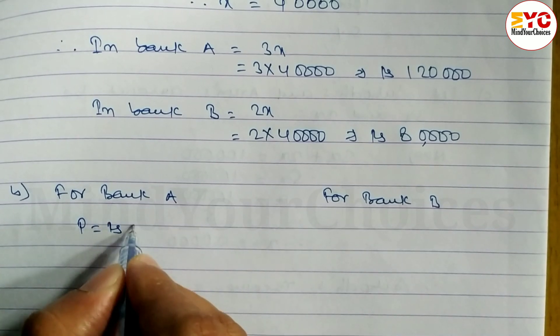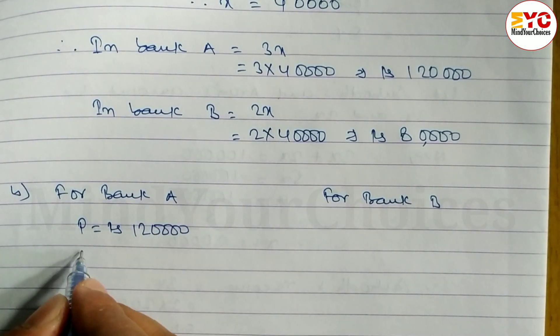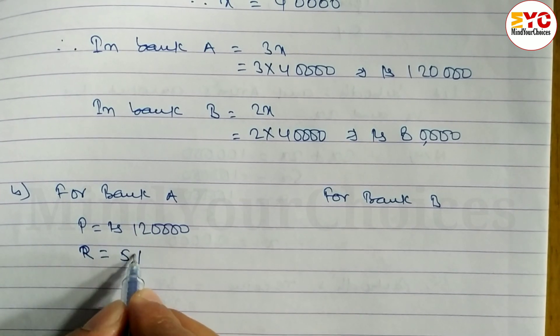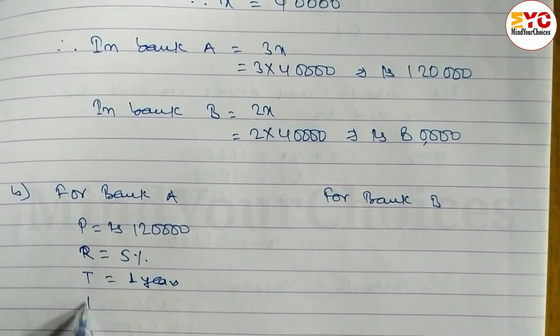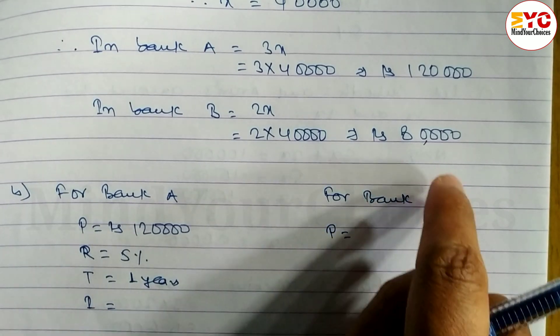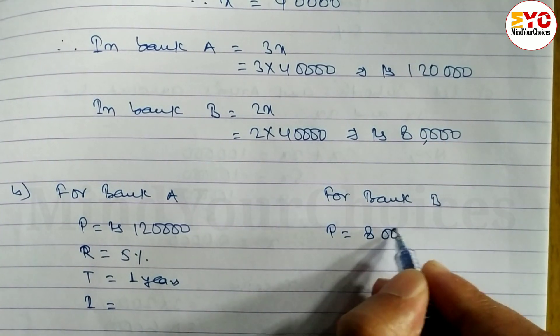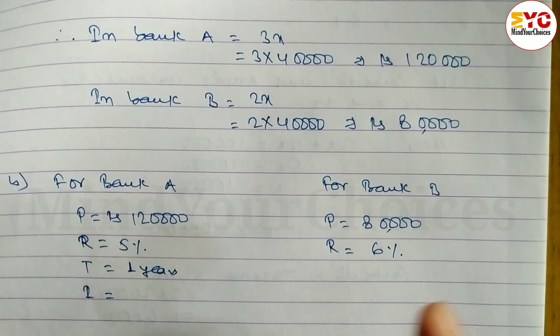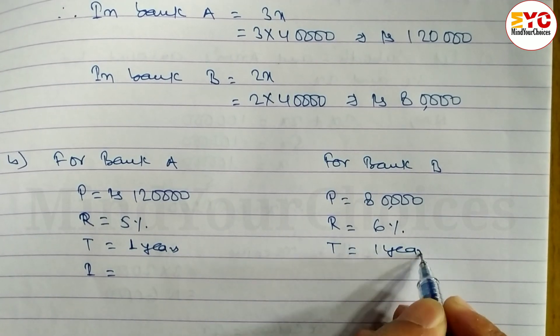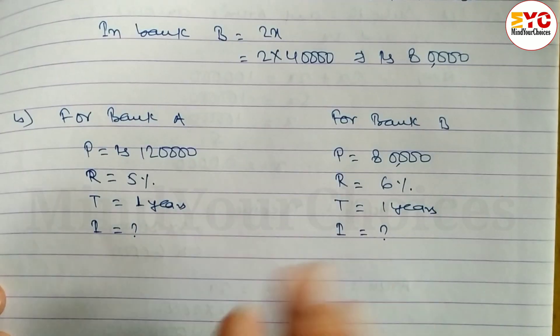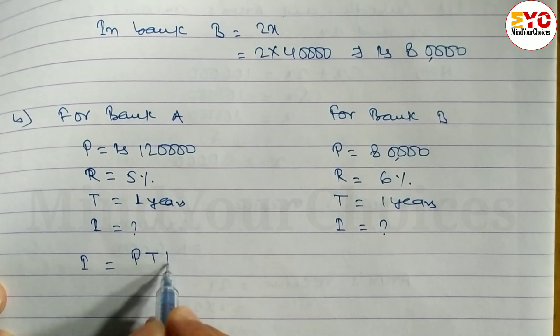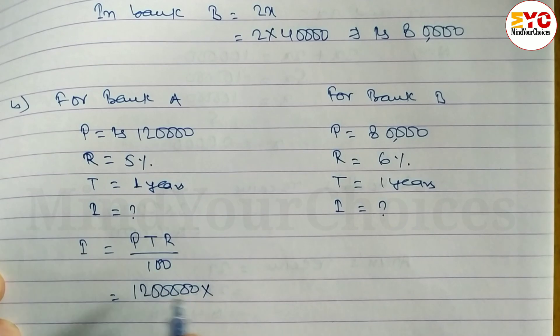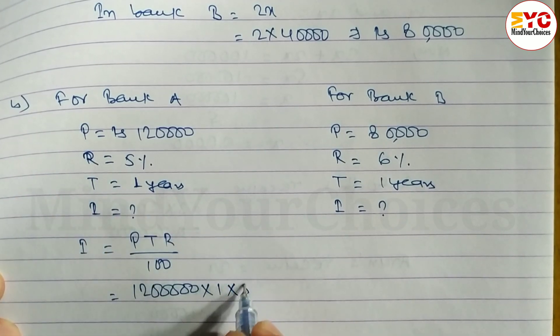So in part B we can write: For bank A and for bank B. P equals 1,20,000 (principal), rate of interest R for bank A is 5%, and time is 1 year. For bank B, the value of P is 80,000, bank B gives 6% interest. Using the formula I = PTR divided by 100, the value of P is 1,20,000, time is 1 year, rate R is 5%, divided by 100.